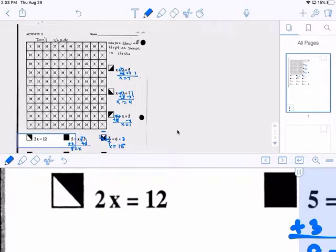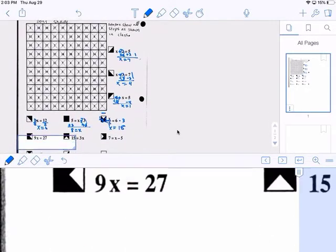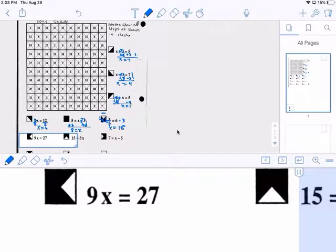And this next one here, this is times, so you have to divide. Divide by 2. X equals to 6. Down this row. This is times, so you have to divide by 9. X equals to 3.